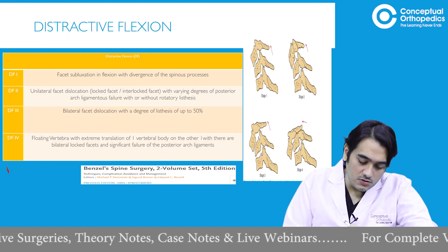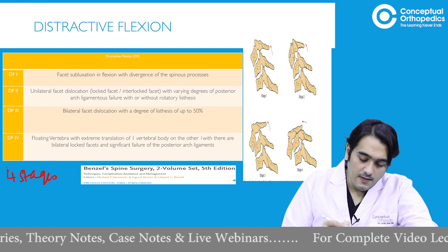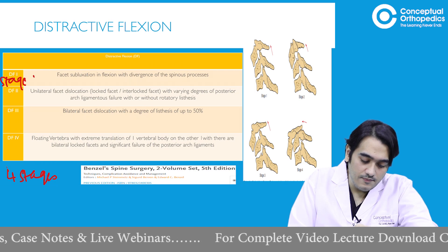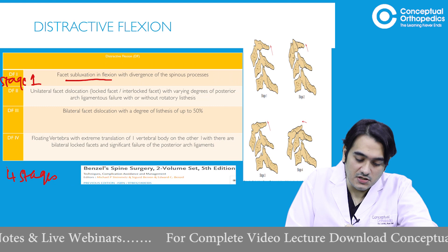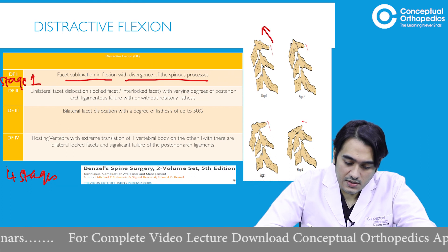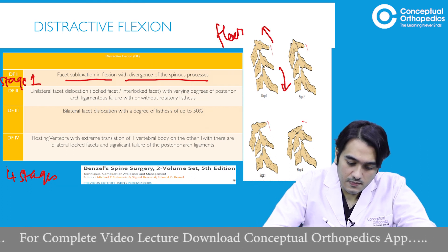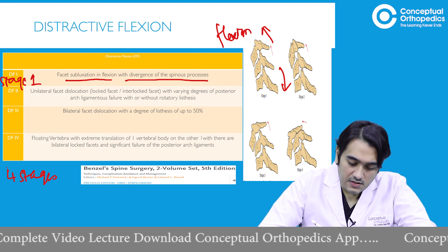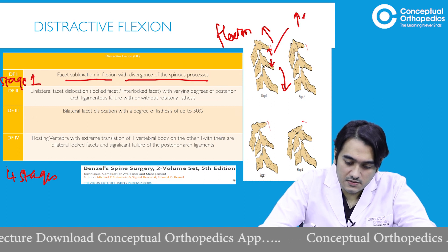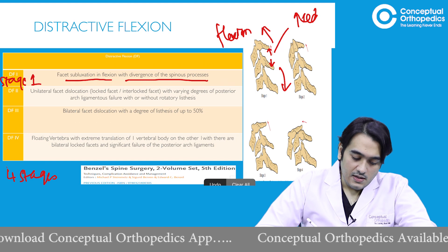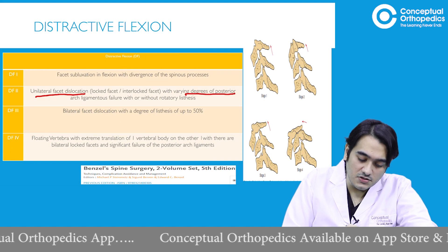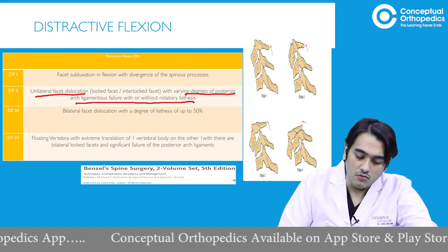Distractive flexion has four stages. In stage one, there is facetal subluxation in flexion with divergence of the spinous process — the interspinous space is increased. In stage two, when forces progress, there is unifacetal dislocation with varying degrees of posterior ligamentous failure, with or without rotational listhesis. There is a unilateral facetal dislocation occurring at this stage.